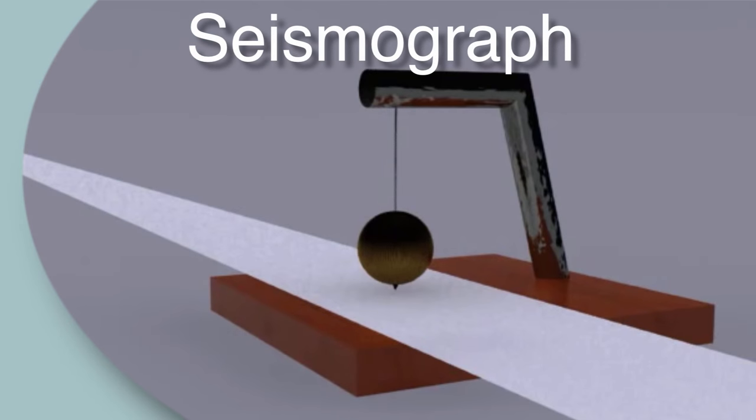A seismograph is a sensitive enough accelerometer to measure tiny vibrations in the earth. The early mechanical versions, before the use of electronics, work like this: